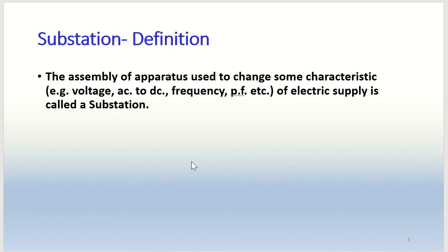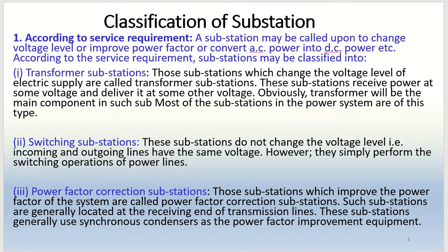Substation definition: the assembly of apparatus used to change some characteristics — which can be voltage, AC to DC conversion, frequency, power factor, etc. — of electric supply is called a substation. Based on this definition we have different classifications of substation.